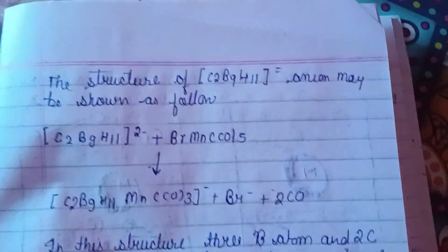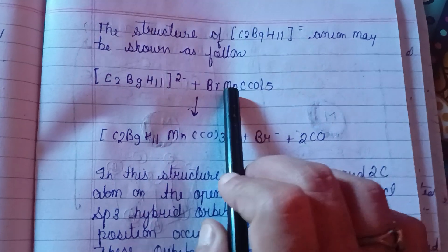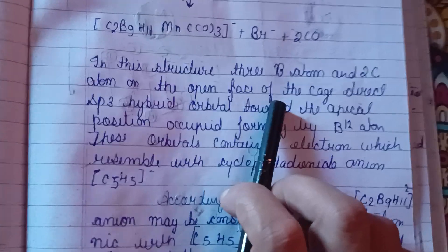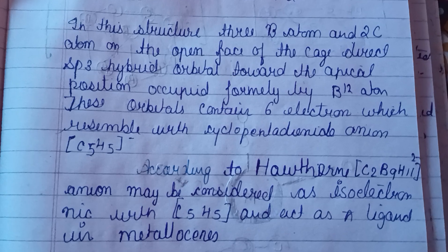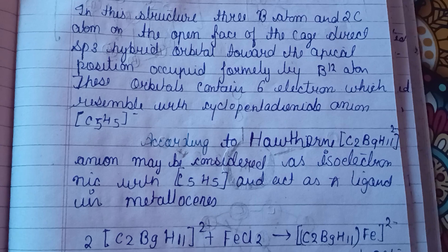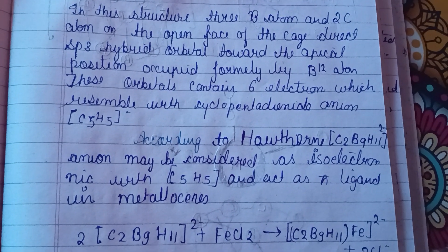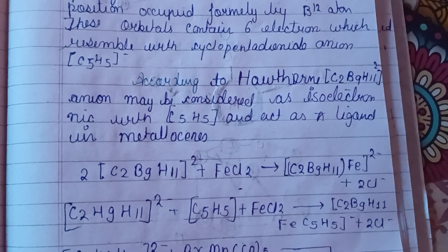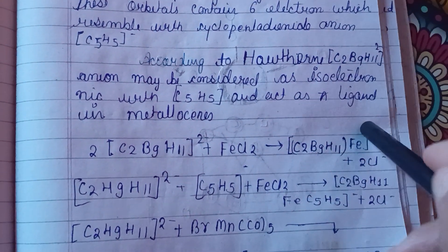The structure of the anion may be shown as follows. In the structure, the B atom and two carbon atoms on the opening face of the cage direct sp3 hybrid orbitals, with the apical position formerly occupied by the B12 atom. These orbitals contain six electrons, which resembles the cyclopentadienyl anion C5H5⁻. According to the Hückel rule, the anion may be considered as isoelectronic with this and acts as a pi ligand.